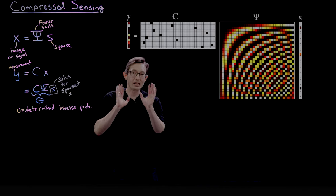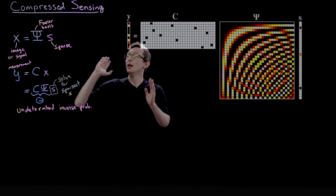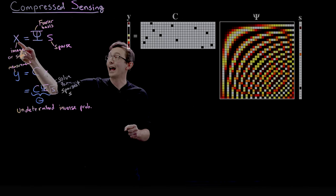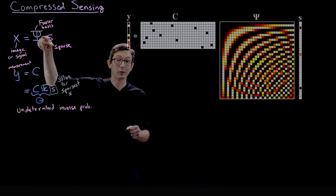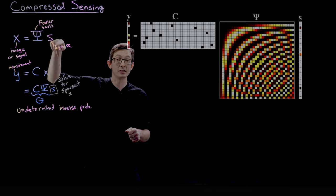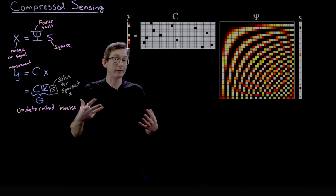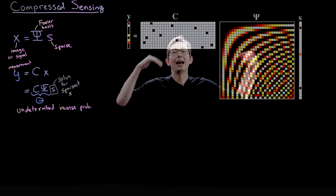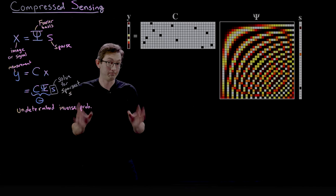And the s that we're looking for, we want the sparsest s. So solve for the sparsest s out of all possible s's that you could solve for. And remember, that's based on this fundamental observation that all signals are compressible in these universal transform bases. So x, when I Fourier transform it, is going to be ultra sparse. So what I'm looking for is a vector s that satisfies this system of equations and is as sparse as possible.